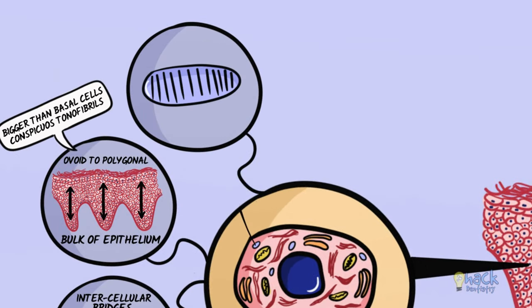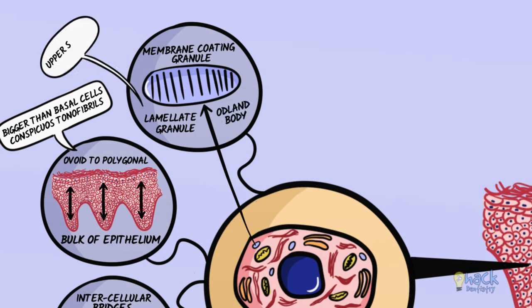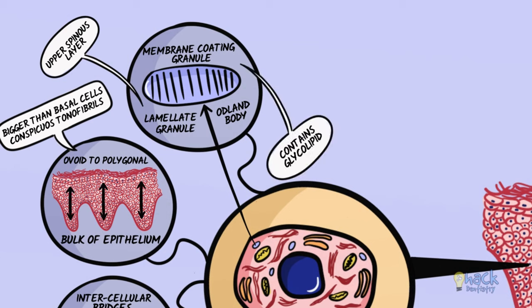An organelle called the membrane coating granule or lamellar granule, also called the Odland body, appears in the uppermost spinous layers. This is an elongated organelle with parallel lamellae and contains glycolipid.